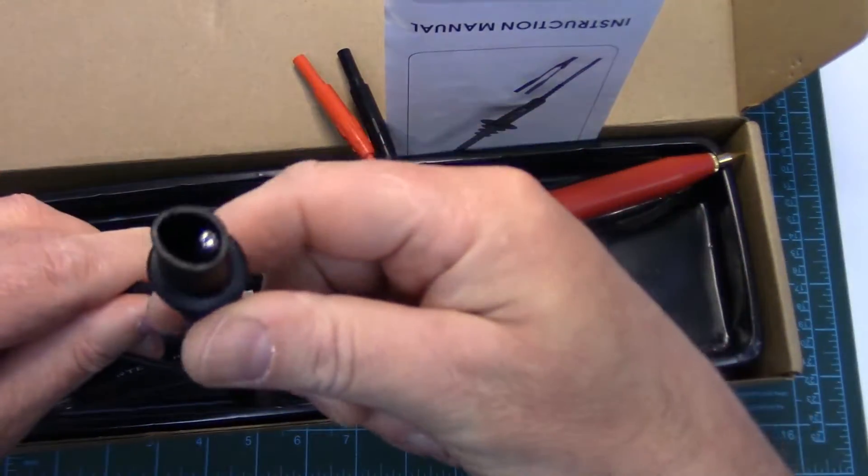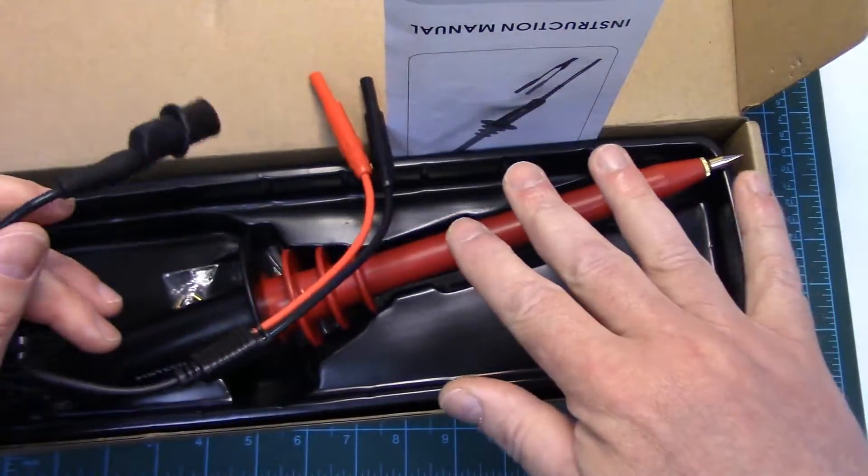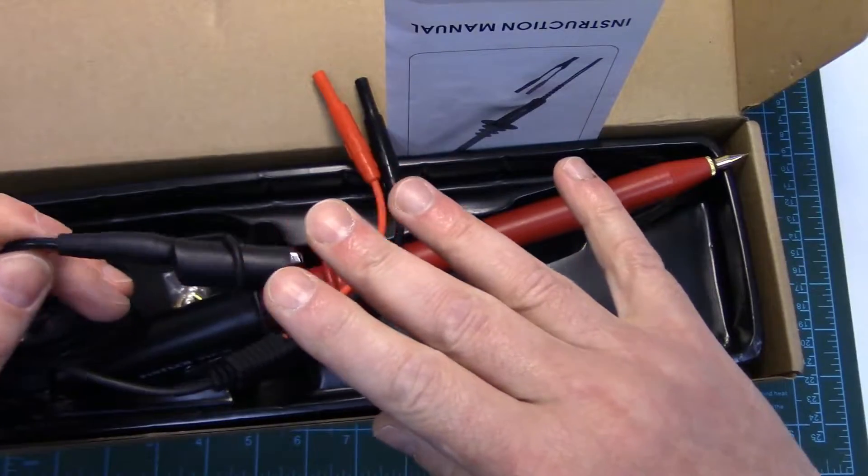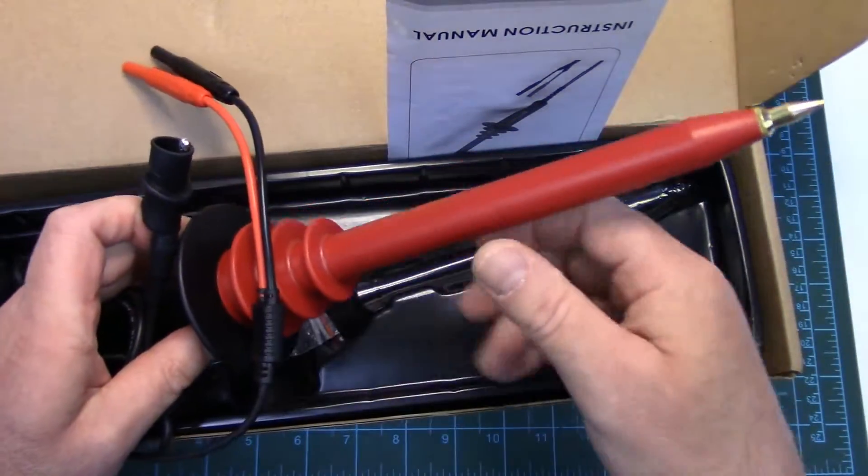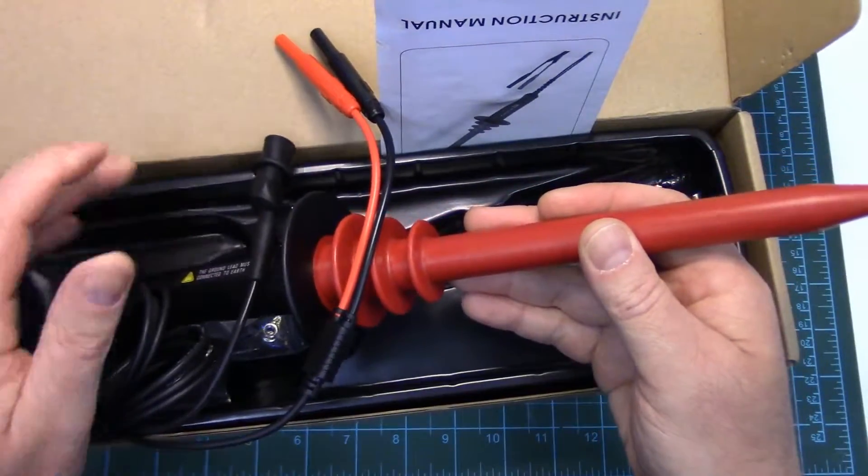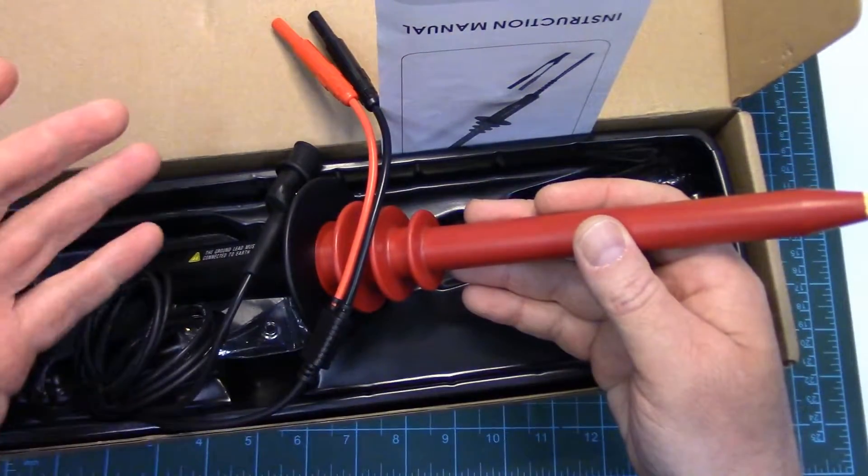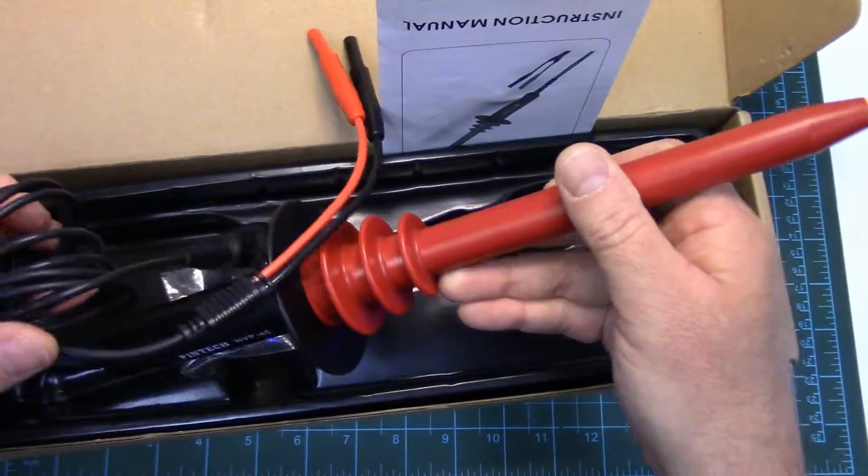And then the other wire on here is the grounding lead. And anytime you use one of these things, you're supposed to have this earth ground. So if any voltage did by chance arc past this into the circuit, it won't take out your multimeter. It'll go straight to ground and it'll also prevent you from getting a shock.